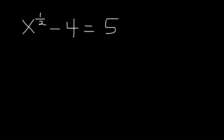The first step we're going to try to do is we want to get the variable that has the fractional exponent, in this case x to the one half power by itself. And that's very easy to do in this problem. We're simply going to add four to both sides, so five plus four is nine.